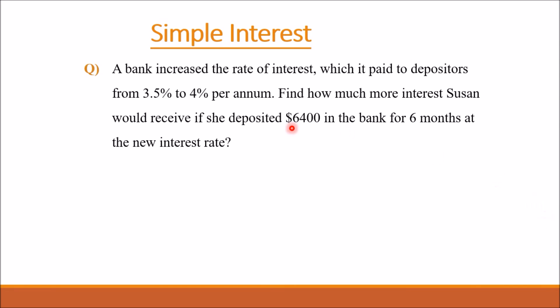Let's have another question. A bank increased the rate of interest paid to depositors from 3.5% to 4% per annum. Find how much more interest Susan would receive if she deposited $6400 in the bank for six months at the new interest rate. We need to find the difference in interest, not a single interest value. We can use the same formula I equals PRT over 100.